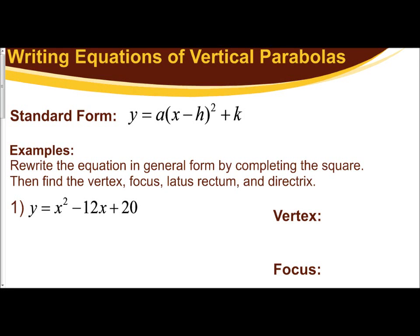In the following video, we're going to examine how to write equations of vertical parabolas into standard form. Remember, the standard form for a vertical parabola is y equals a times the quantity x minus h squared plus k. The main concept we're going to use to write an equation in standard form is to complete the square. This concept was covered back in chapter 5, so we're going to use these three examples as a refresher.